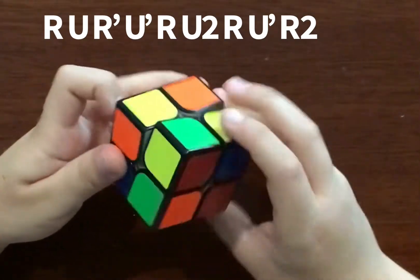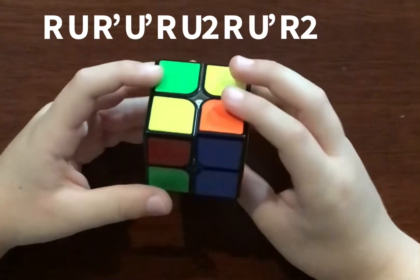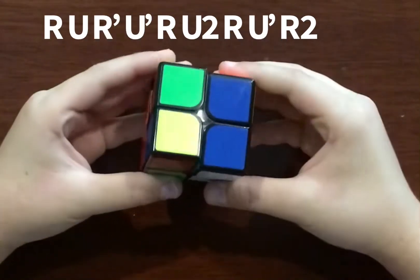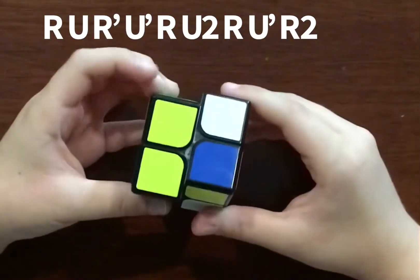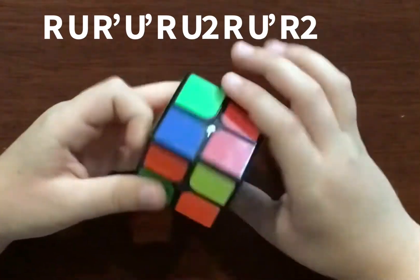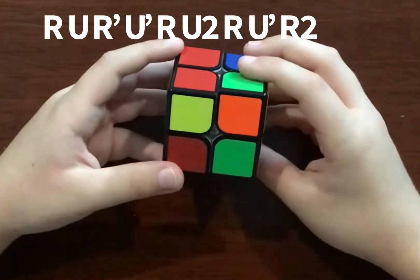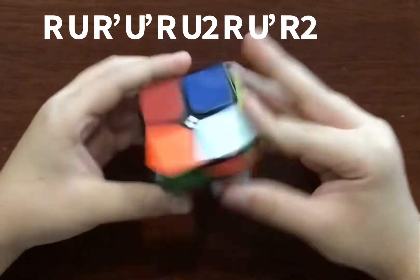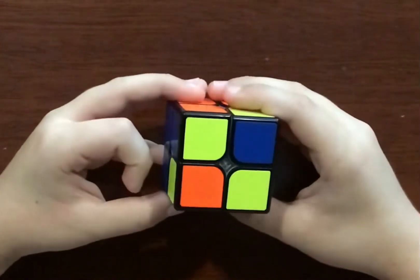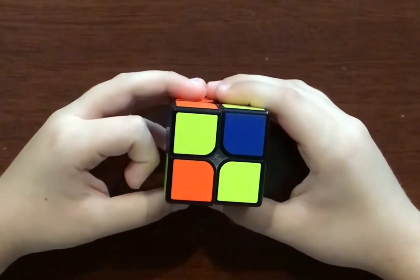But sometimes you're gonna get this case when there's no bar. So this is what you're gonna do: you do the same algorithm R, U, R prime, U prime, R, U2, R, R, U prime, R2. You see the bar? And you just do the exact same. Now do the next step.